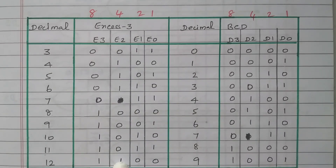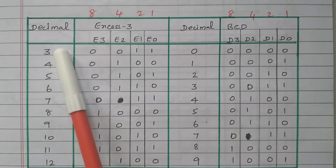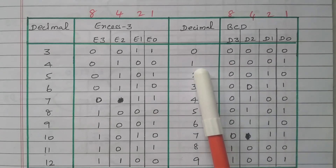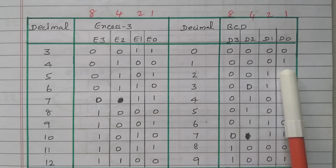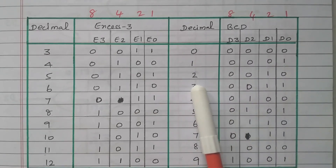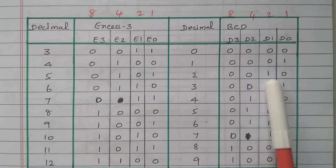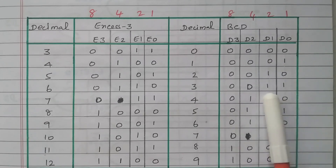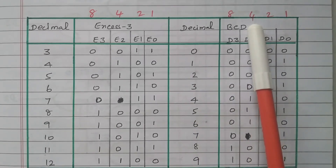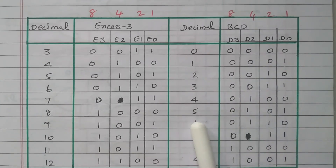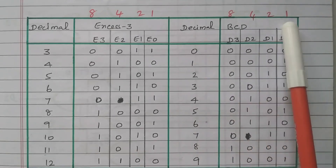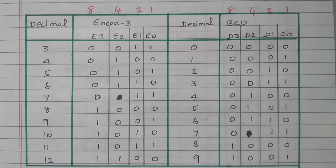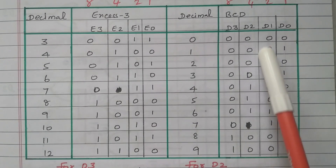This is the normal BCD, which is a standard form with 8, 4, 2, 1 weightage, assigned from 3 to 12 on the XS3 side. For BCD 0, all bits are 0. For 1, the fourth bit is 1 (0001). For 2, the third bit is 1 (0010). For 3, the third and fourth bits are 1 (0011). For 4, the second bit is 1 (0100). For 5, the second and fourth bits are 1 (0101). So now we have the truth table converting XS3 code to BCD code.